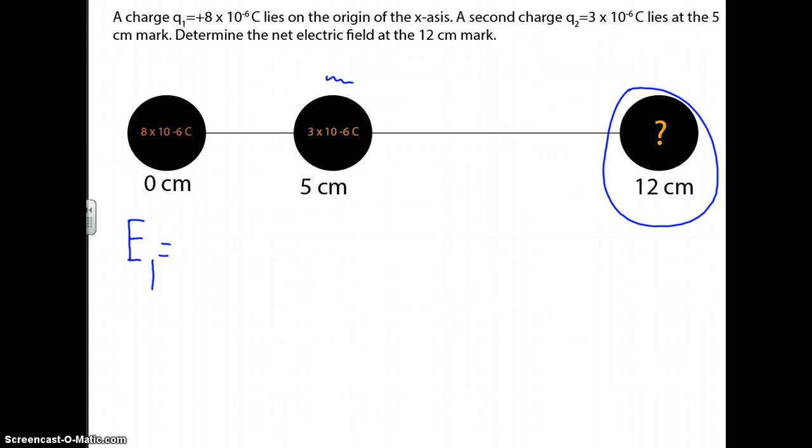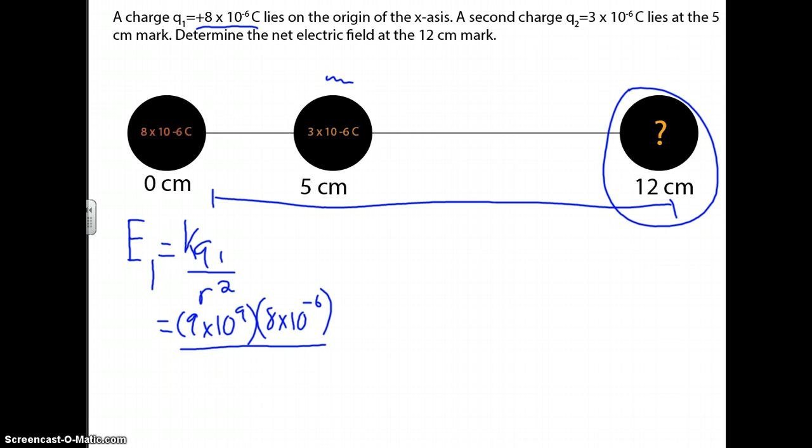First, electric field equals K Q1 over radius squared. K is a constant, 9 times 10 to the 9th. And you use the first charge, which is that 8 times 10 to the negative 6. Now the radius. The radius from here to here is 12, because remember, you're ignoring this one right here.